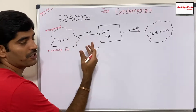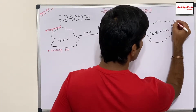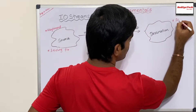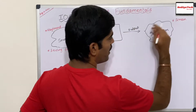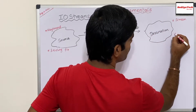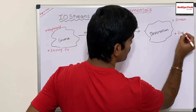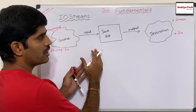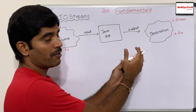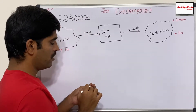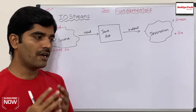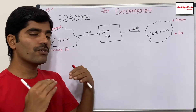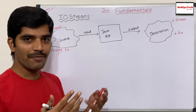By using our keyboard we can give input to the Java application, and with the help of an existing file we can also give input. Similarly, we can get output to display on the screen, or we can write it into a file. The way we give input to the Java application and retrieve output from it is nothing but IOStreams. The Java developers at Oracle have already defined a set of classes and methods to achieve this functionality — those classes and methods we call IOStreams.